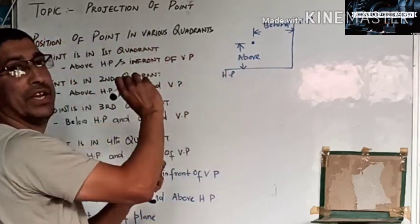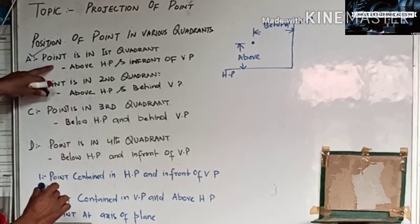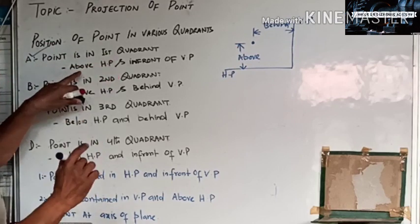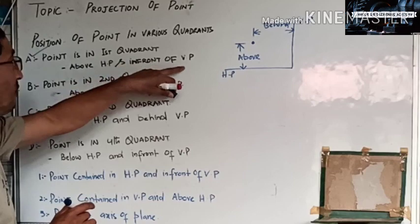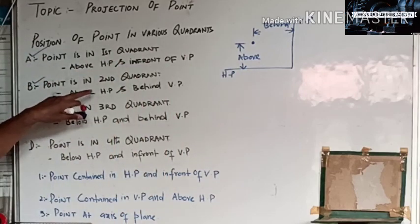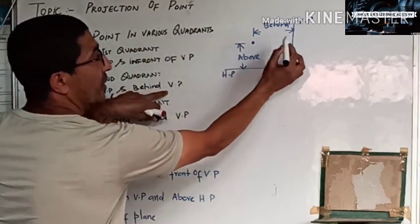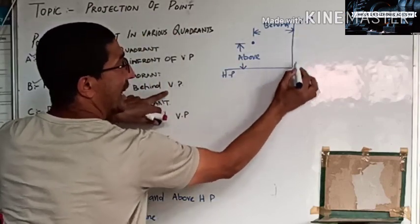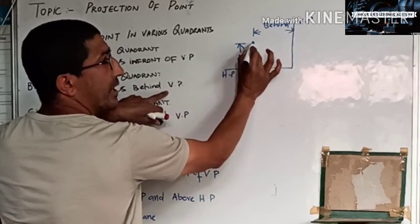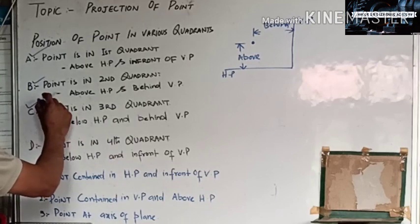So the first condition: point is in the first quadrant — above HP and in front of VP. Now the other condition: point is above HP but behind VP.